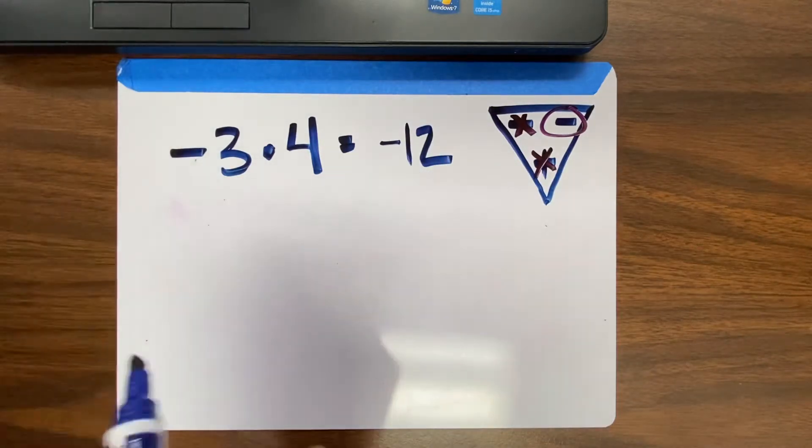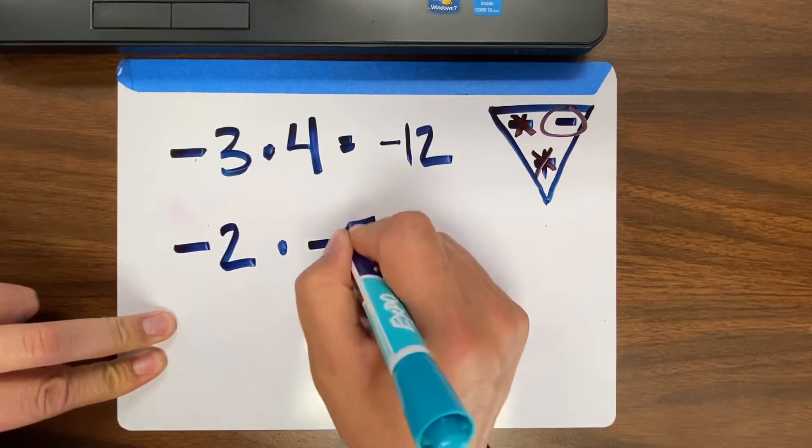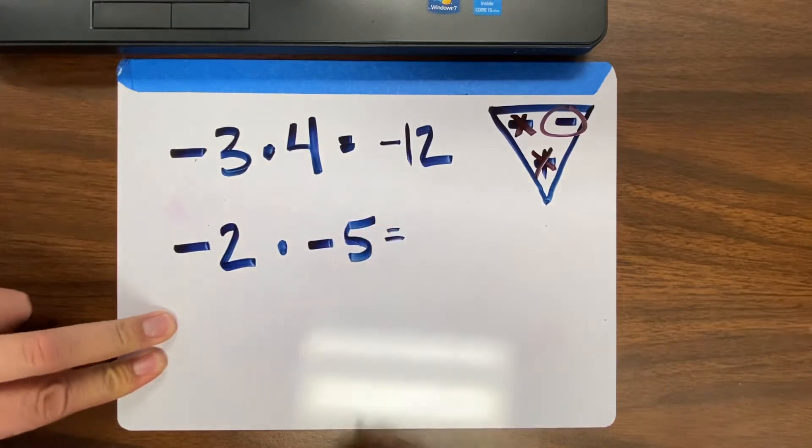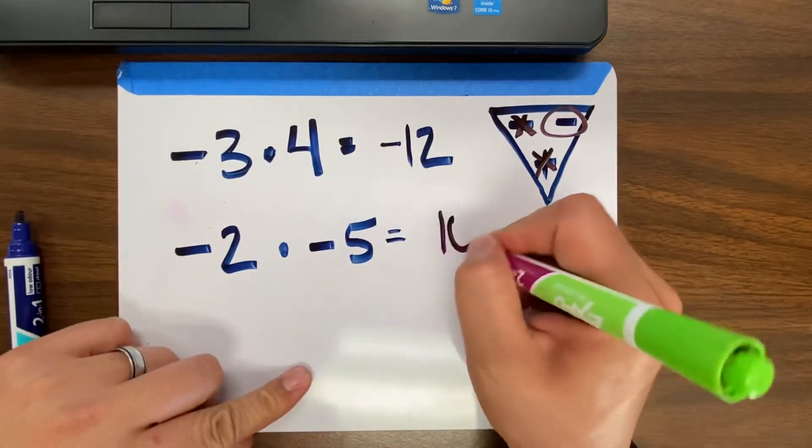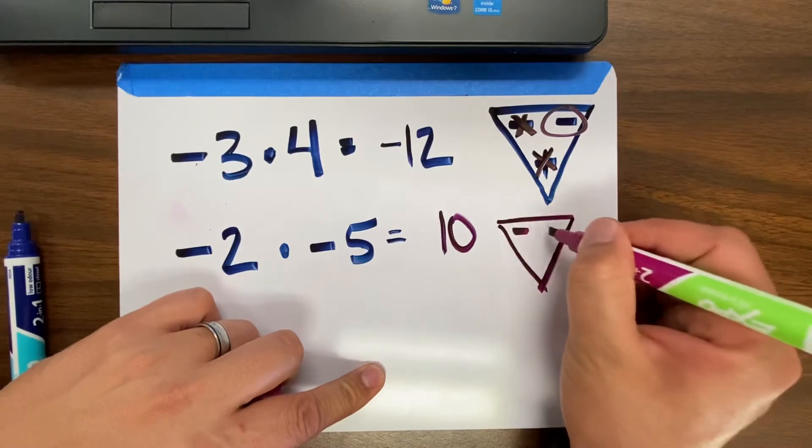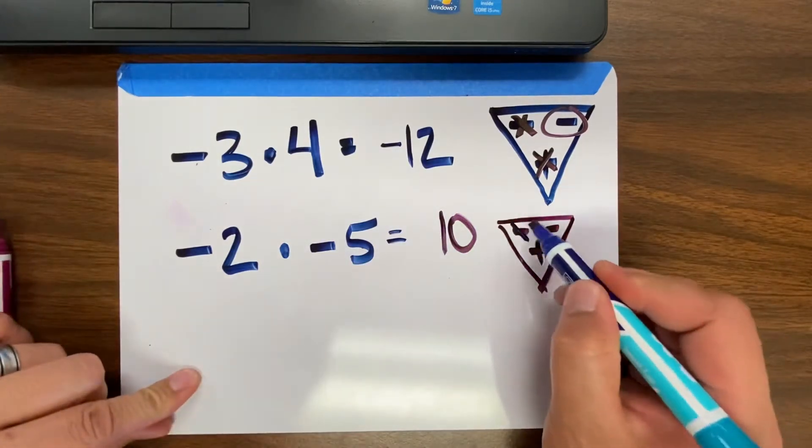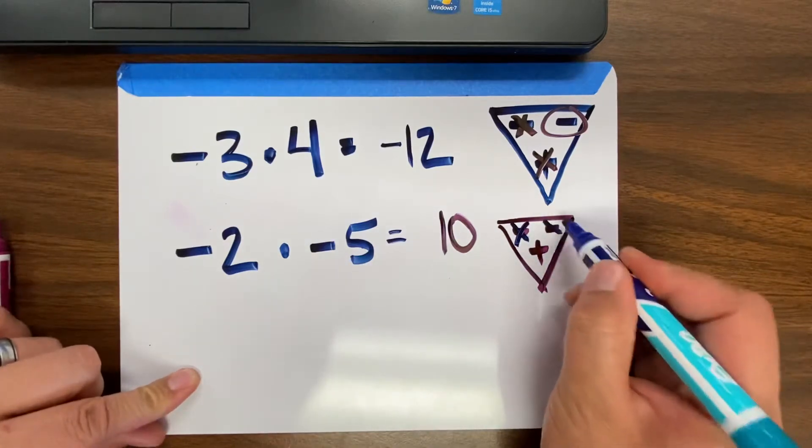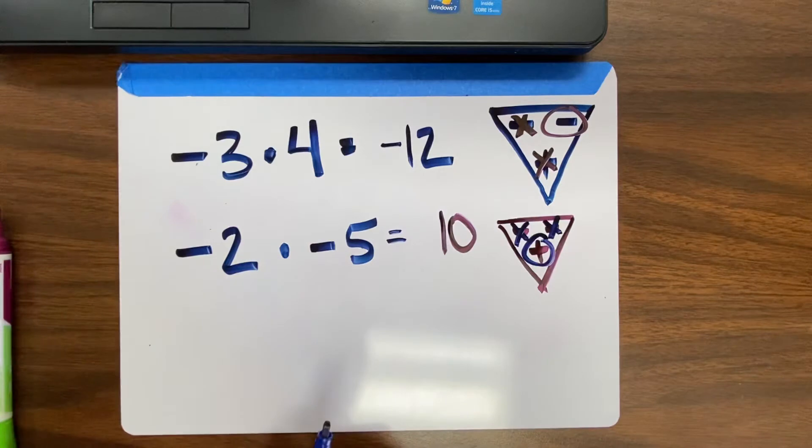I'll give you another example: negative 2 times negative 5. 2 times 5 is 10. Now we decide, is it positive or is it negative for an answer? The first number is a negative. The second number is a negative. So all that's left is a positive. So my answer is positive 10.